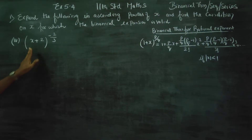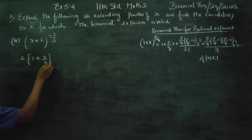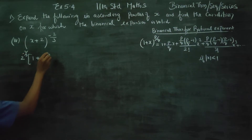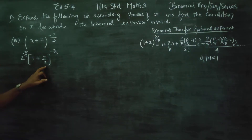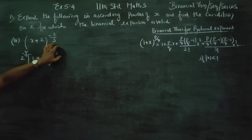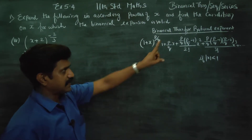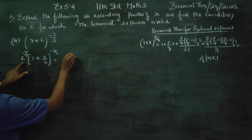First of all, here are two common values. This becomes 1 and this becomes x by 2. If you just multiply by 2, you will be getting 2 and x. The power uses the same formula: (1 + x)^(p/q) with a negative symbol. This is the rational exponent, this is the rational index. Therefore, I am going to apply this formula — it is equal to 2 power minus 2 by 3.